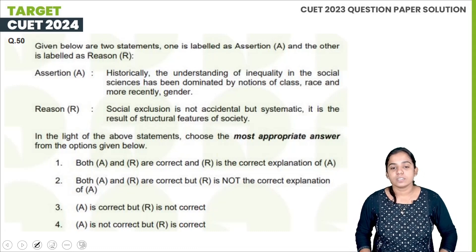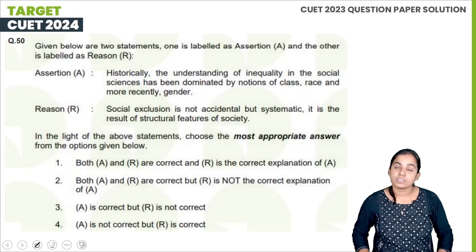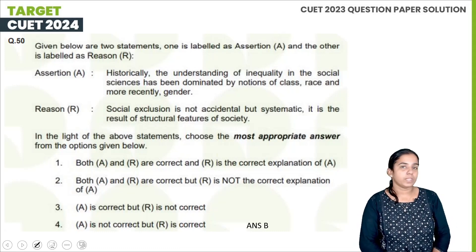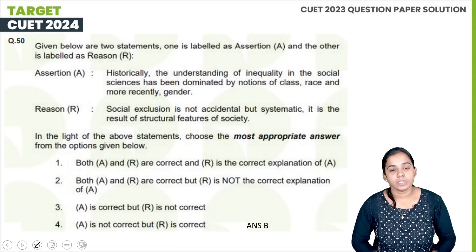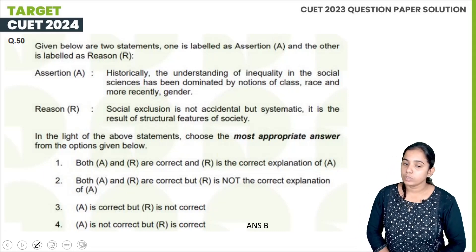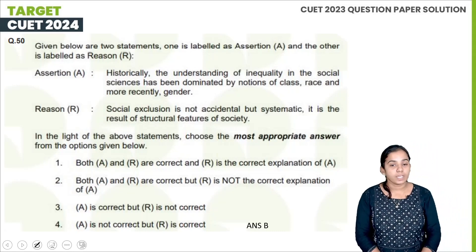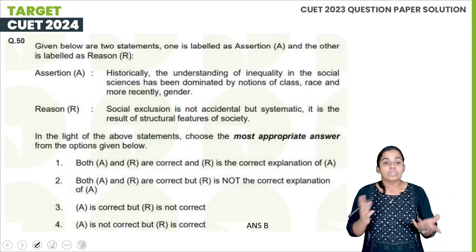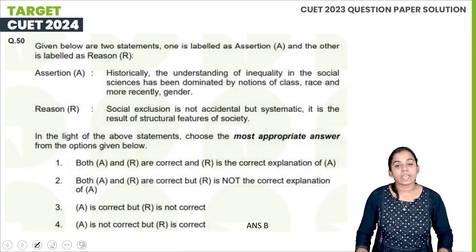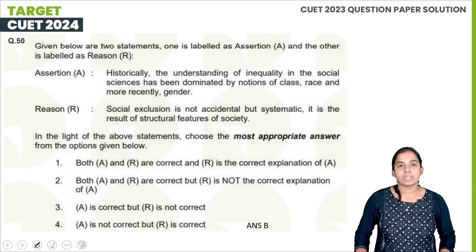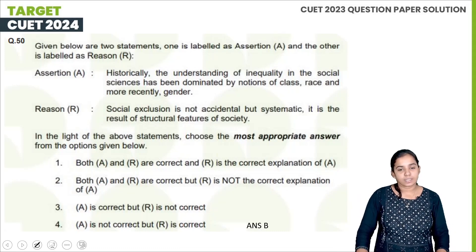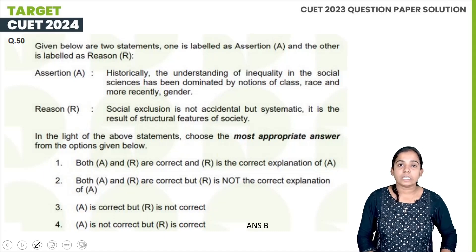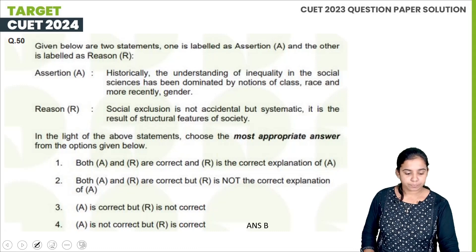Second statement: Social exclusion is not accidental but systematic — it is the result of structural features of society. Historically, class, race, and gender have driven inequality, and this is the reason for social exclusion. The correct option is B.